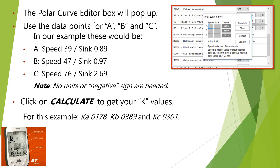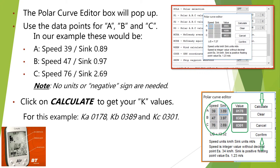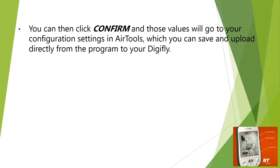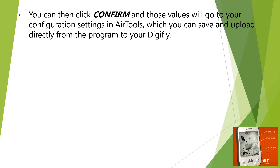On the picture on the right, you can see where the speed and sink values go in the oval, what your K values are in the rectangle, and arrows pointing to the Calculate and Confirm buttons. You can then click Confirm, and those values will go to your configuration settings in Air Tools, which you can save and upload directly from the program to your DigiFly.